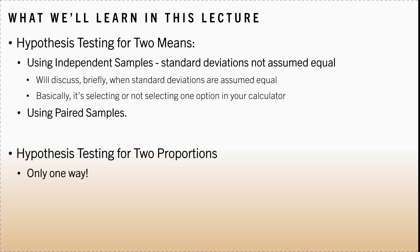The first thing we're going to start talking about is hypothesis testing for two means, and there are going to be three different video lectures that cover this. The first video — this one — is going to provide an introduction to what's going on, and then we're going to talk about using independent samples with standard deviations not assumed equal. We'll briefly discuss when standard deviations are assumed equal, but basically it's selecting or not selecting one option in your calculator.